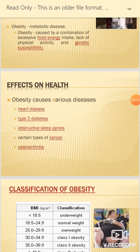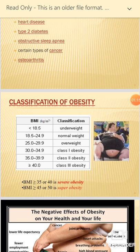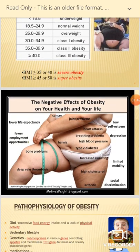The WHO has given a classification of obesity based on BMI. If BMI is less than 18.5, it is underweight. From 18.5 to 24.9 is normal weight — the normal BMI for an adult human being. Above 30 to 40 is obesity class 3, and if it goes above 40, such as 45 or 50, it is super obesity.